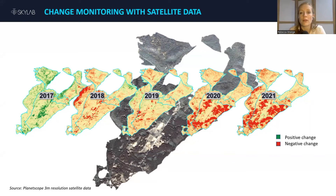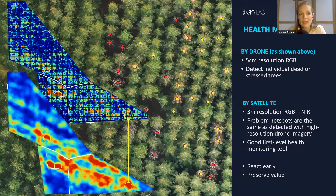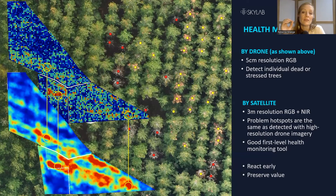I should point out that there's no terrestrial reference data needed for this analysis, nor indeed for any of the products I've focused on here. We first identified individual dead and dying trees with five centimeter resolution drone data, and then we did the same analysis with three meter resolution satellite data. As you can see by the two resulting maps, the problem hotspots are basically exactly the same. So satellite data can be used very effectively as a kind of first level health monitoring tool.